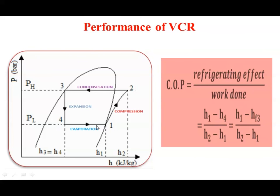The work done is during the compression process. Knowing the enthalpies at points 1 and 2, h2 minus h1 gives the work done during compression. So COP equals (h1 - h4) / (h2 - h1). Generally, the value of COP is greater than one, unlike efficiency which is less than unity. The basic difference: efficiency is calculated for work-producing machines, while COP is for work-absorbing machines.